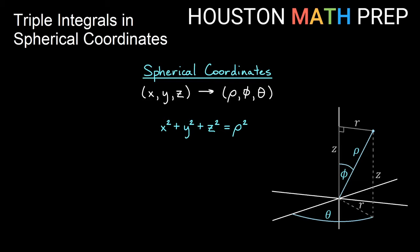Beyond the basic sphere equation, let's get more conversions using the right triangle where z, r, and rho are the sides and phi is the angle. Taking cosine of phi: adjacent over hypotenuse gives z over rho. Multiplying both sides by rho gives us rho cosine phi = z — a nice conversion for z into spherical coordinates.